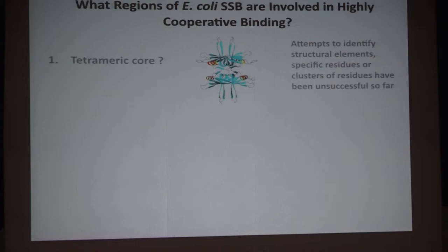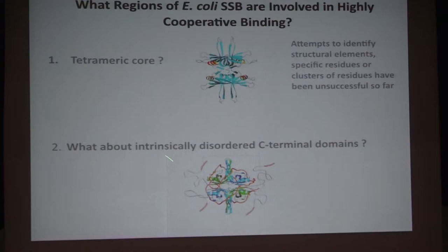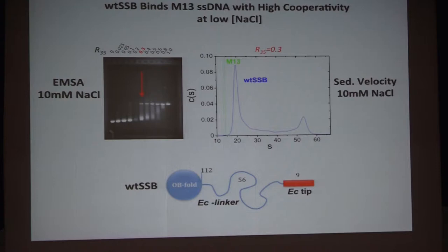What we want to discuss is what regions of the protein are involved in this highly cooperative binding. Attempts by us and others to mutate various regions of the DNA binding core to affect cooperativity have always failed. That led us to consider the intrinsically disordered regions of the C-terminal domains.